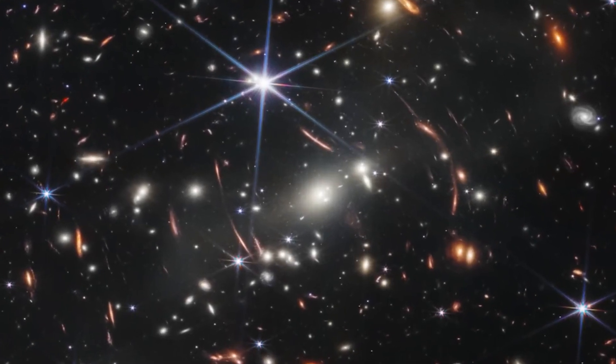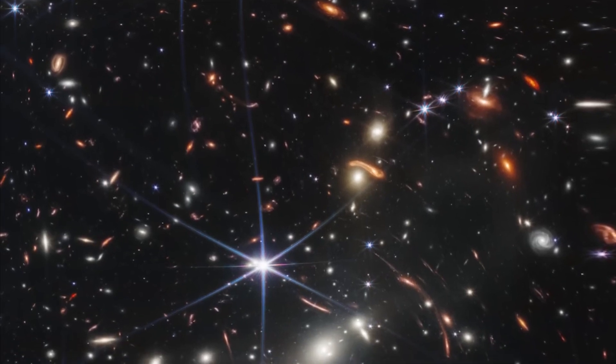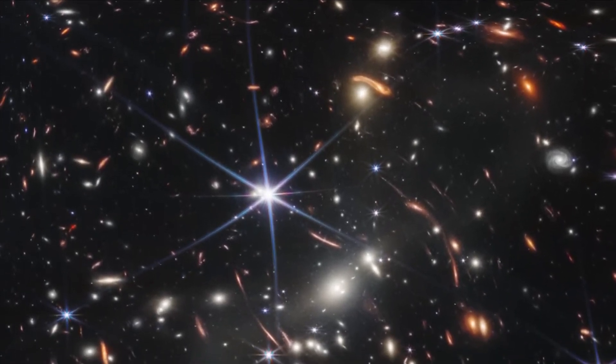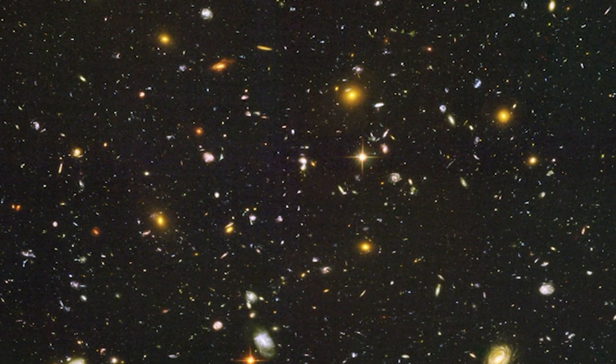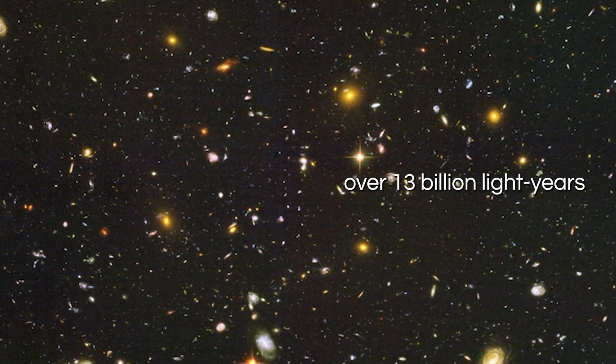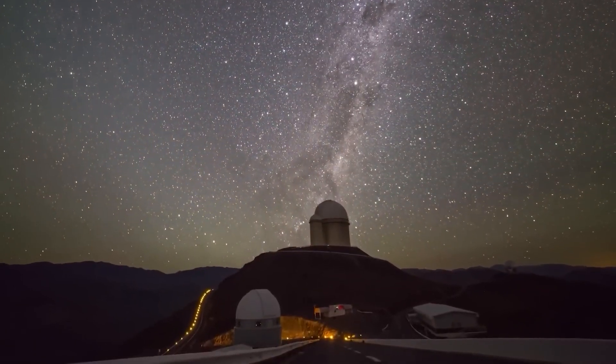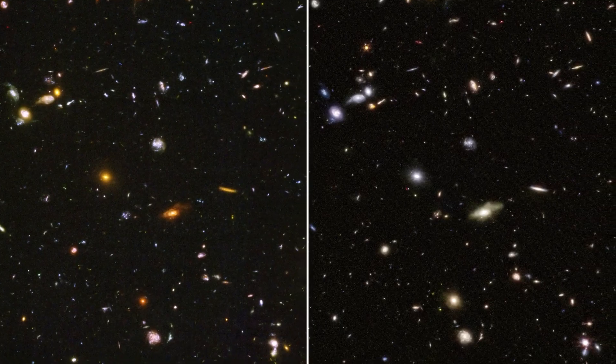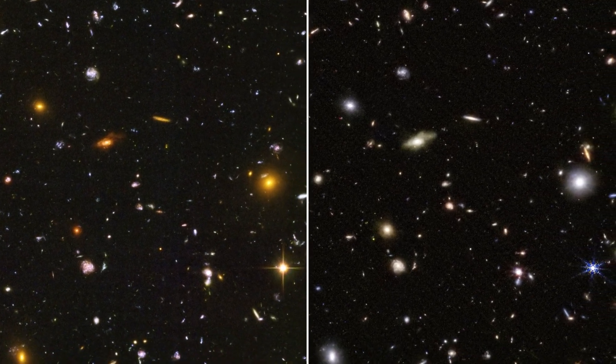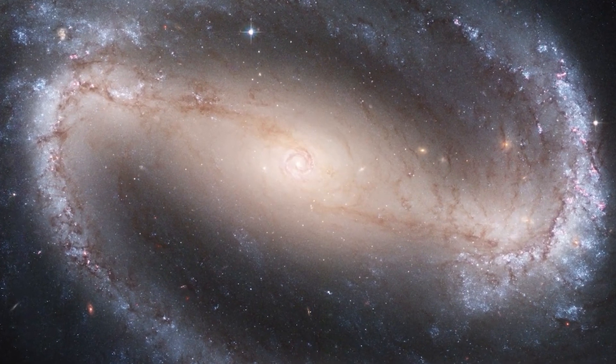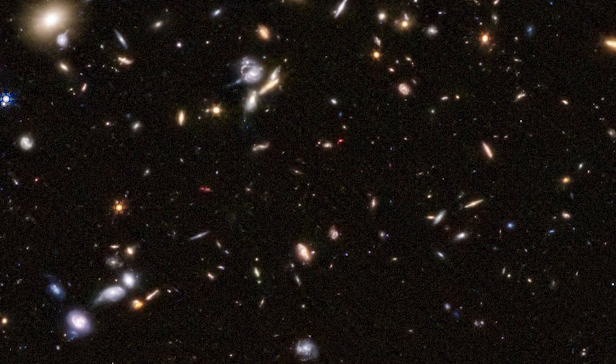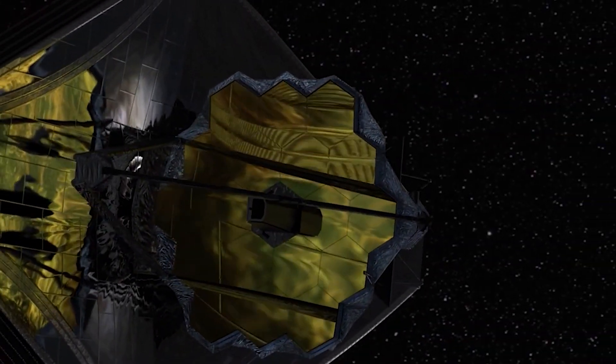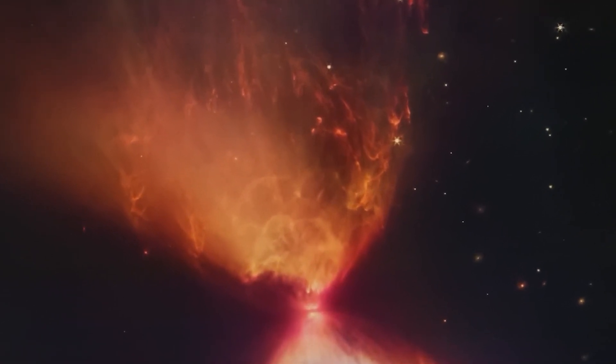This captivating image is not just a stunning snapshot of the universe. It's also the deepest and most detailed image ever taken. At its heart, a brilliant cluster of galaxies illuminates the scene, their light traveling an astonishing distance of over 13 billion light-years. As you explore this cosmic masterpiece, your eyes will be treated to the mesmerizing sight of thousands of younger galaxies swirling and twirling in the background. This extraordinary image is a testament to the power of the James Webb Space Telescope, unlocking secrets from the far reaches of time and space.